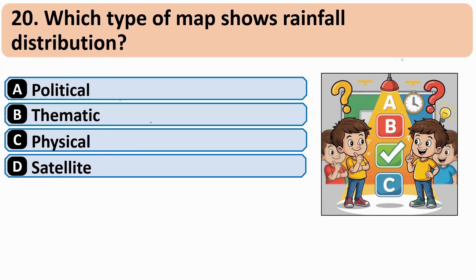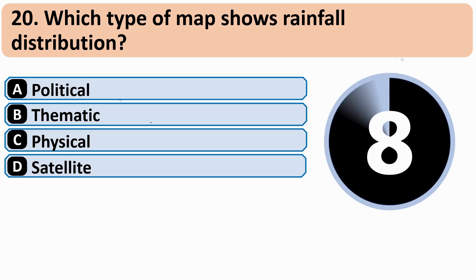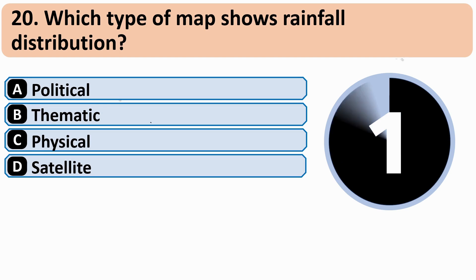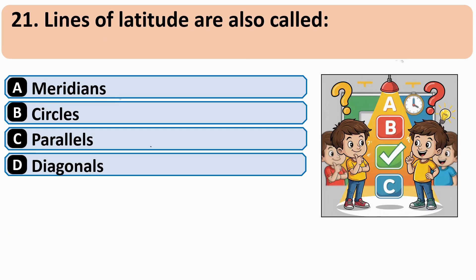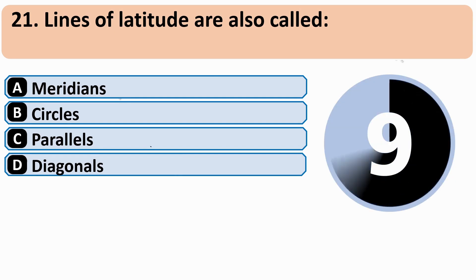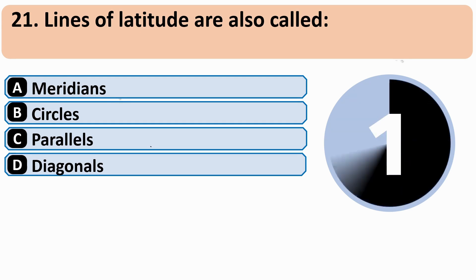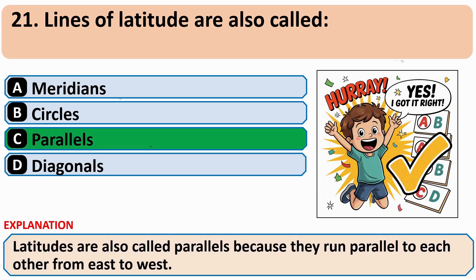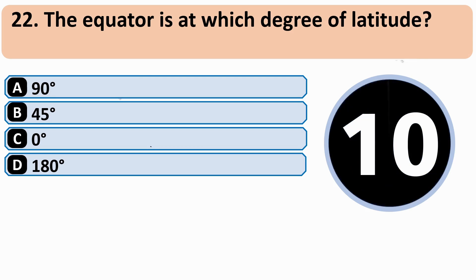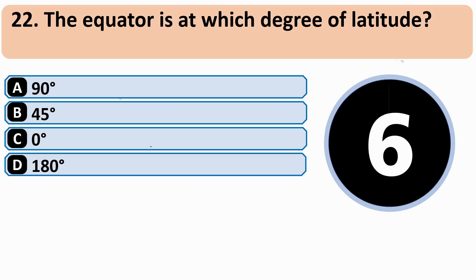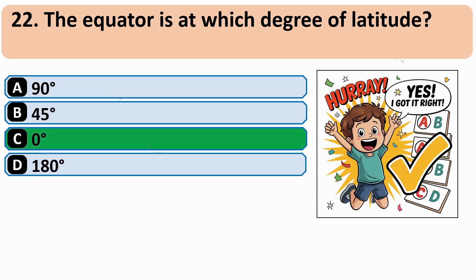Which type of map shows rainfall distribution? The correct answer is B — the thematic map. Lines of latitude are also called? The correct answer is C — parallels. The equator is at which degree of latitude? The correct answer is C — zero degrees.